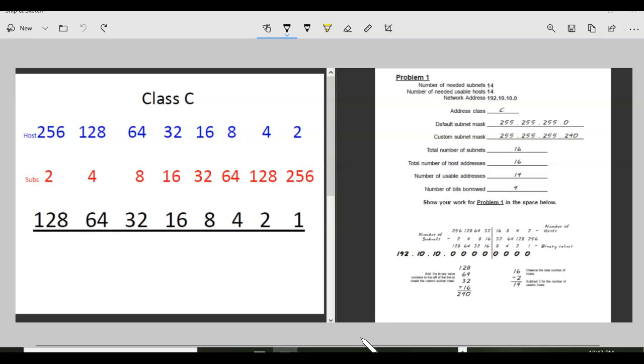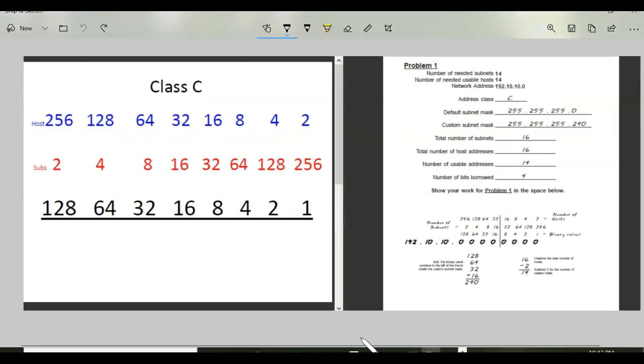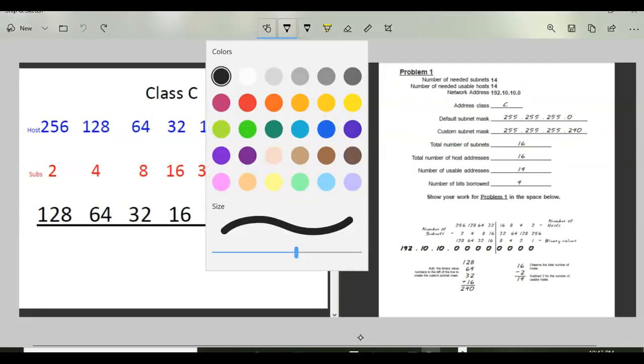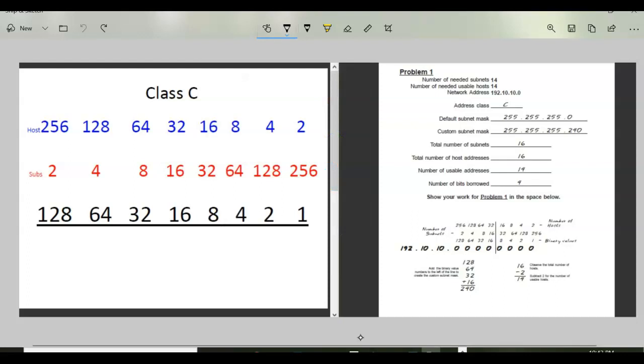So that becomes the first line. If you want to you could put a B just so you know that that's binary, that's entirely up to you.